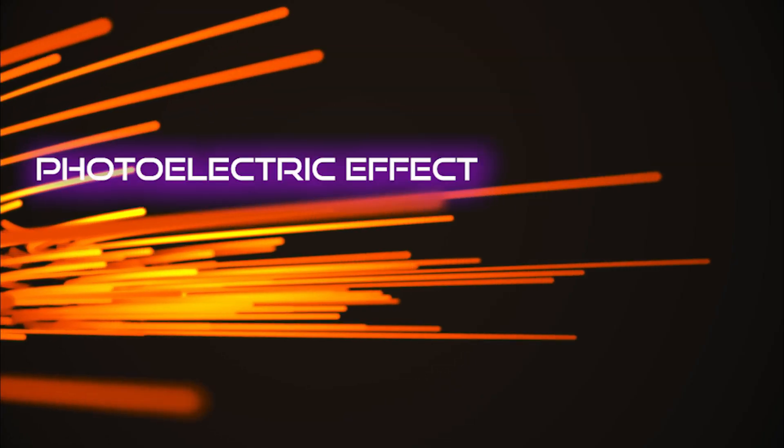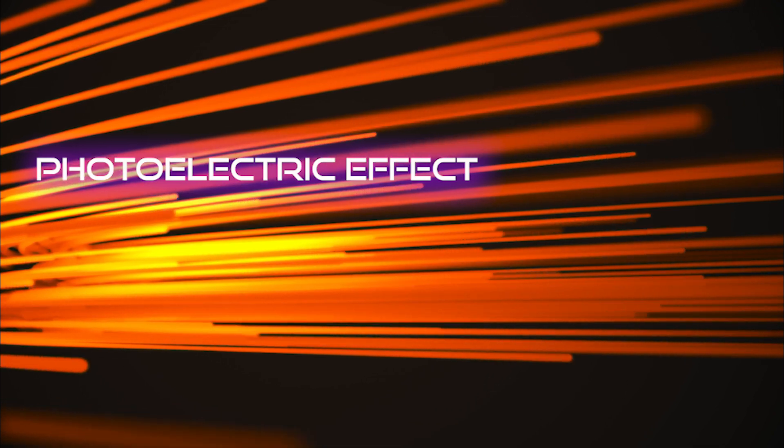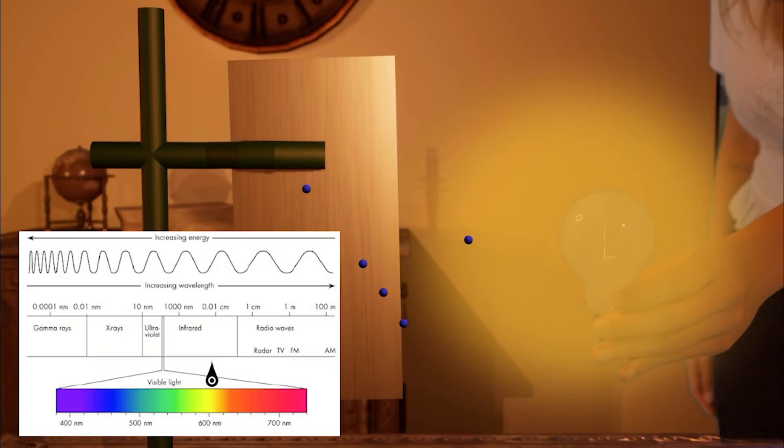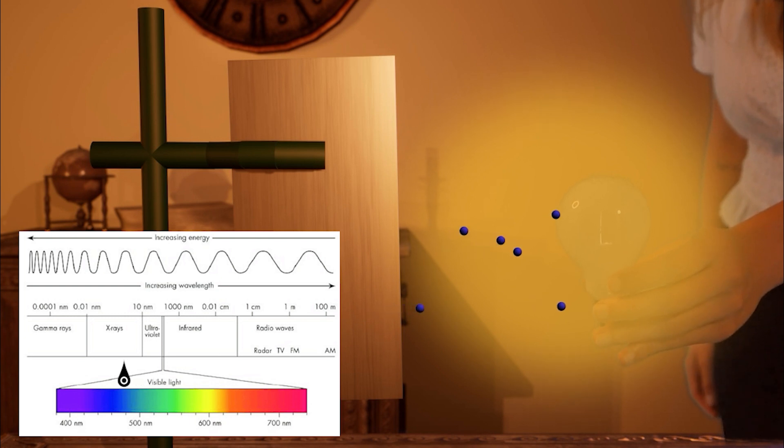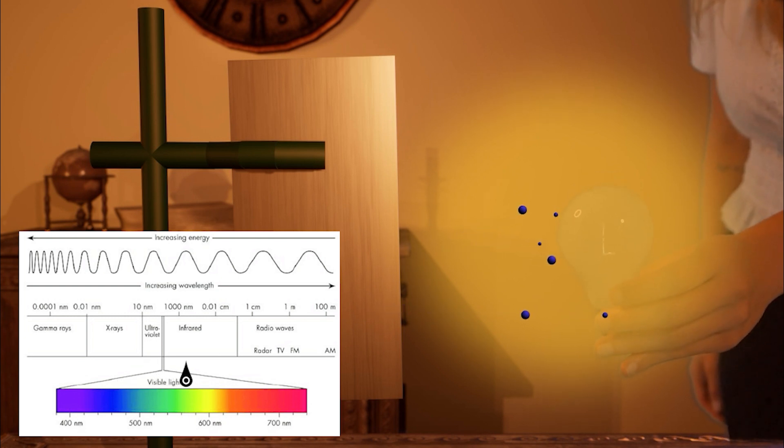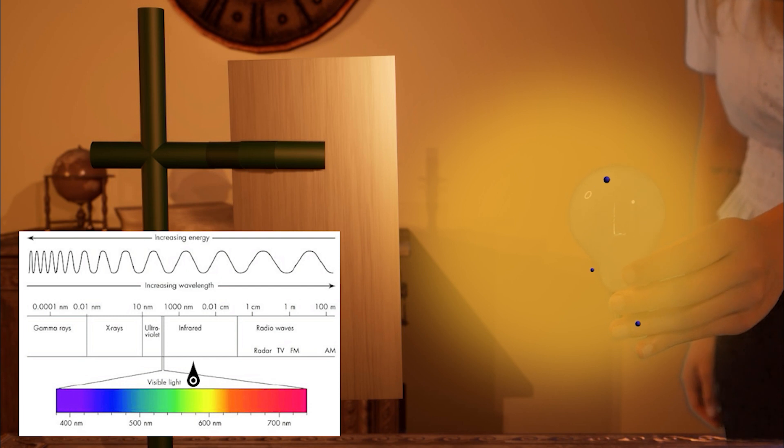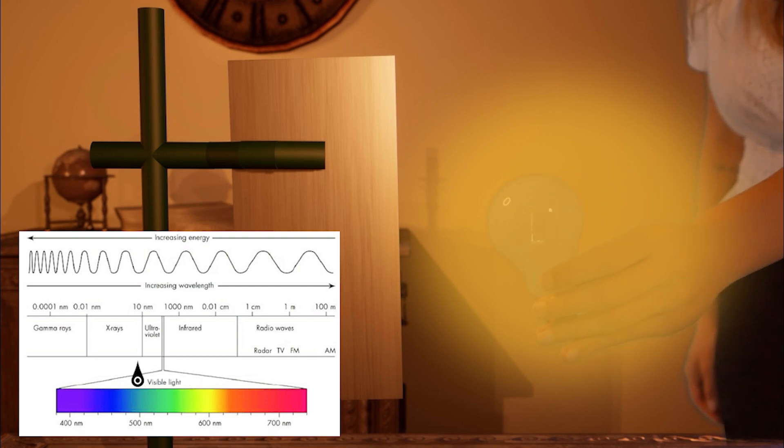This is called the photoelectric effect. What Leonard discovered is that electrons only escape when light with a certain frequency, or wavelength, is shined upon the metal — it didn't work with all wavelengths. This could not be explained by Maxwell's electromagnetic theory, which meant that sometimes light acted as a wave and sometimes as a particle. That is how Einstein explained the photoelectric effect, discovering the quantum of electromagnetism — the quantum of light — the photon.